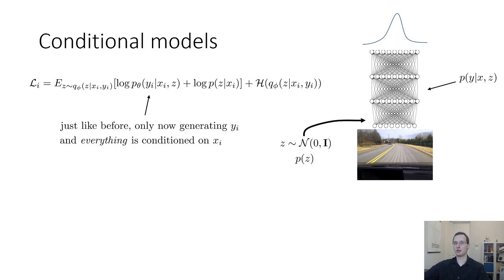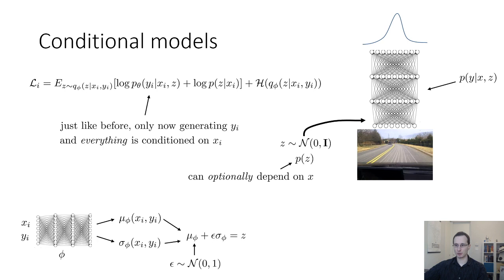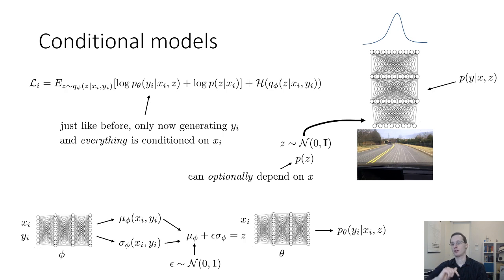This is useful if you want a multimodal policy in imitation learning, or a VAE that generates images conditioned on some other information — for example, generating images for objects of a particular category. The architecture is simple: the encoder takes in x and y and produces mu and sigma. You sample noise and compute mu plus epsilon times sigma to get z, then the decoder takes in x and z and produces y. So y is what's being autoencoded and everything is conditioned on x — that gives you a conditional VAE.